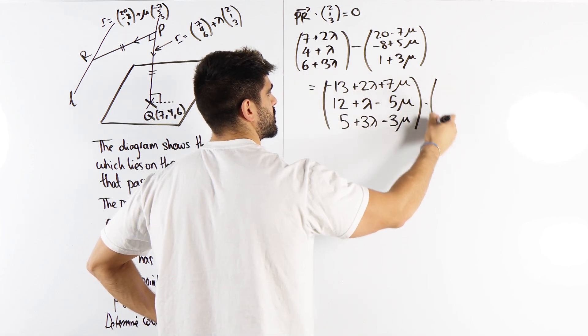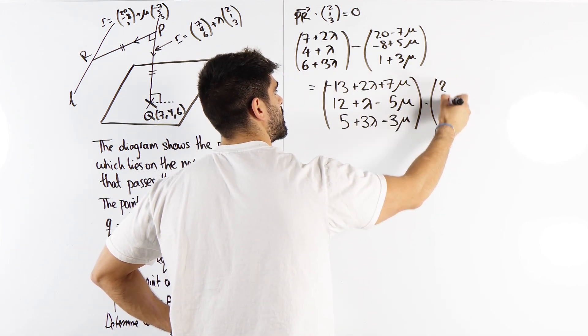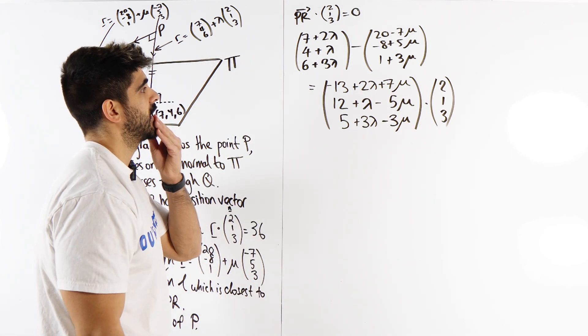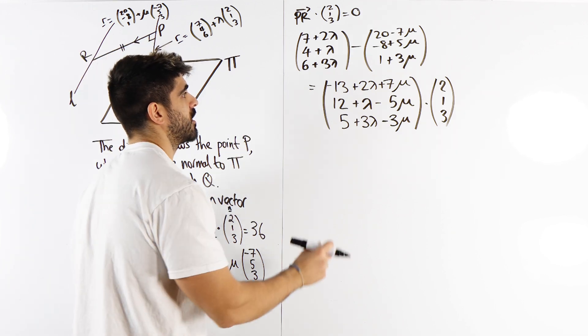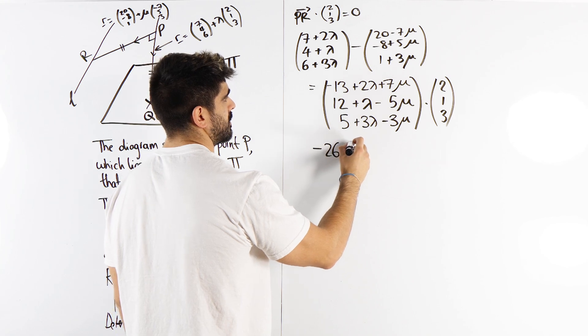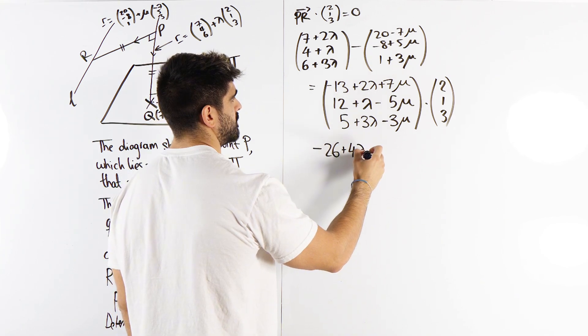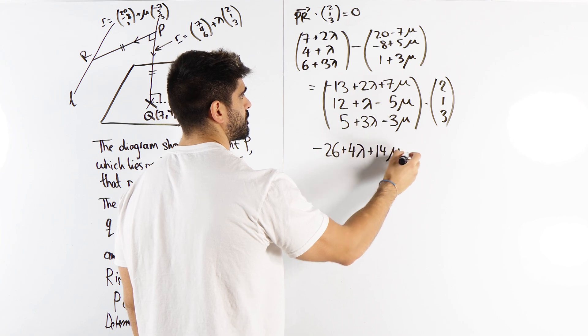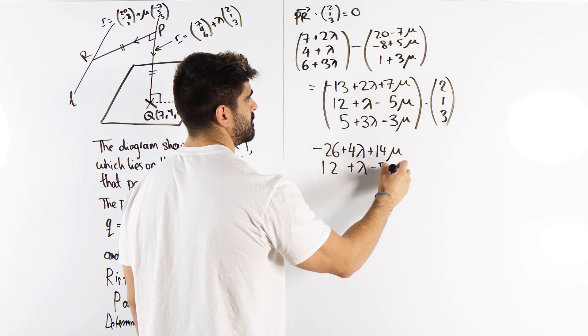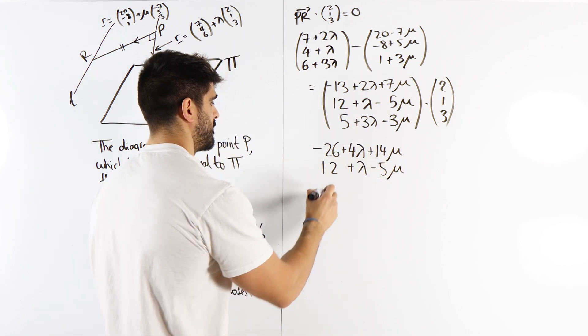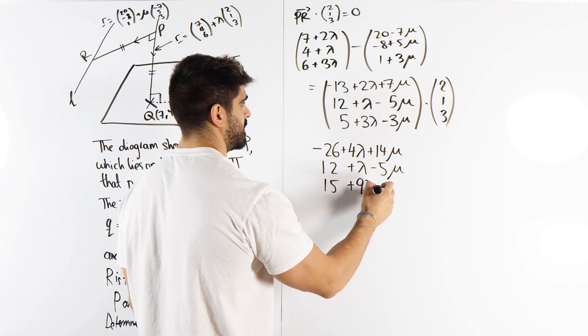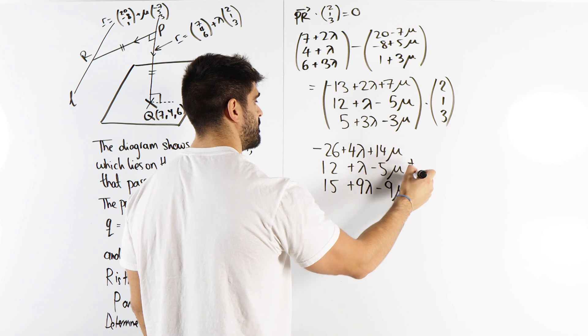And then we're dotting this with 2, 1, 3 and making it equal to 0. I think I'm just going to times it across. I'm not going to write in one line. So I have minus 26, 4 lambda, 14 mu, 12 plus lambda minus 5 mu, then we have 15 plus 9 lambda minus 9 mu. Add them up.